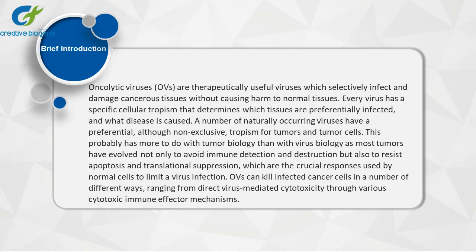This probably has more to do with tumor biology than with virus biology, as most tumors have evolved not only to avoid immune detection and destruction, but also to resist apoptosis and translational suppression, which are the crucial responses used by normal cells to limit a virus infection. Oncolytic viruses can kill infected cancer cells in a number of different ways, ranging from direct virus-mediated cytotoxicity through various cytotoxic immune effector mechanisms.